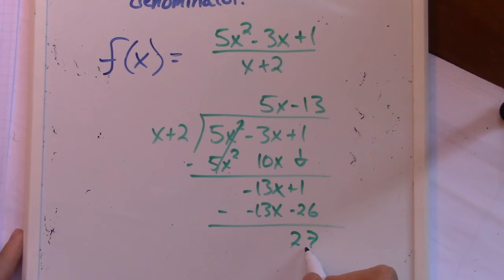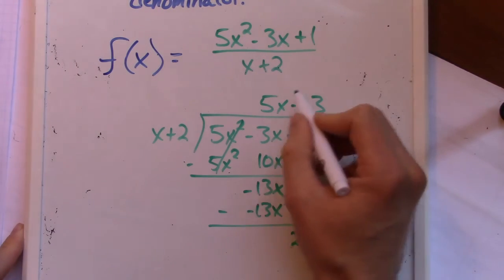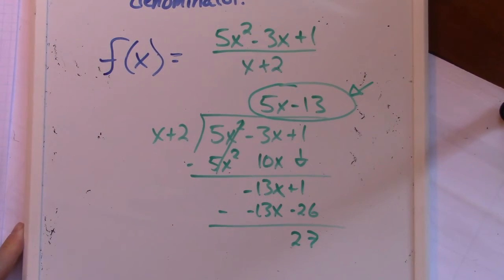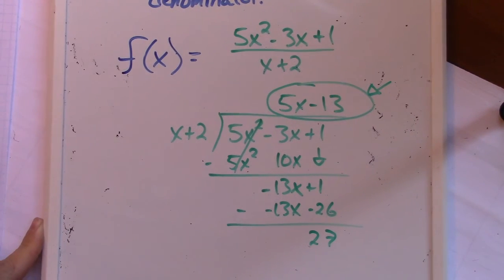So this is gonna be part of my remainder, part of my remainder. I'm not even gonna worry about the rest of this stuff. I'm gonna look at this. That's my quotient. This is going to be my oblique asymptote. So I have an oblique asymptote at y equals 5x minus 13.